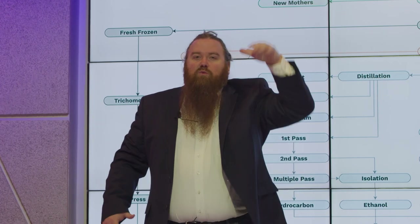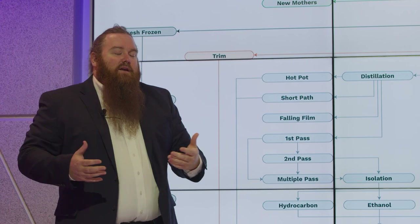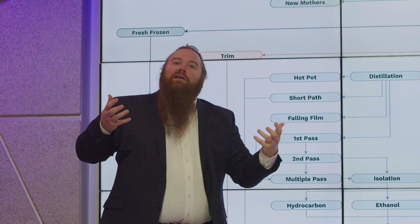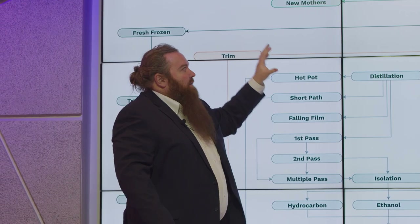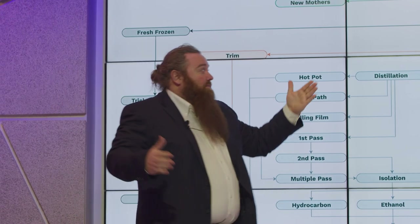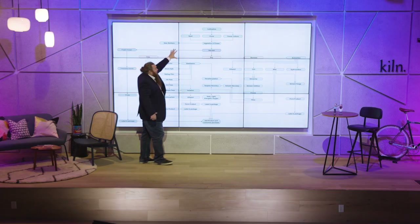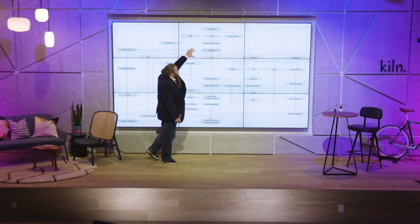This is where we talk about being phenotypically different. Phenotype is when something looks different, whereas genotype means it's genetically different. Typically most of the industry uses clones — that's where you take a mother, cut off part of it, plant it, and it turns into a new plant. Cloning is the most common way to get uniform distribution.